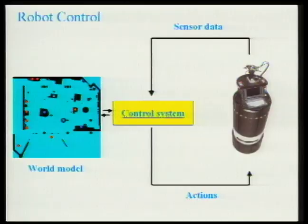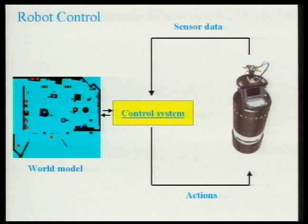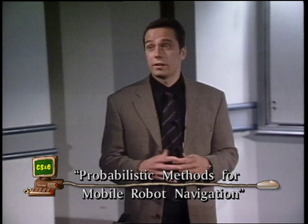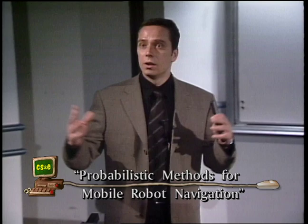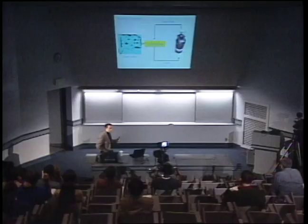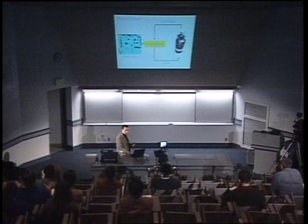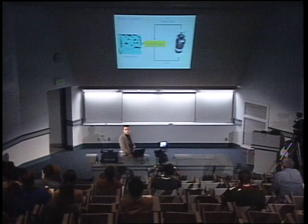These problems do not only hold for mobile indoor robots, but for any type of embedded computer system — a car autonomously driving down a highway, an internet agent collecting data, or intelligent environments that perceive inhabitants and try to adapt to their needs. The key issue of this talk is how to use probabilistic methods to deal with this uncertainty.